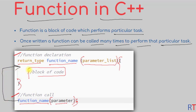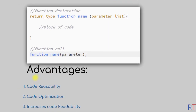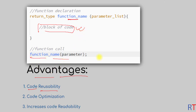This way we can call a particular function and the block of code will be executed. The main advantage of using functions is code reusability — once we have written one block of code inside a function, we can reuse that block of code by calling that function multiple times in our program.